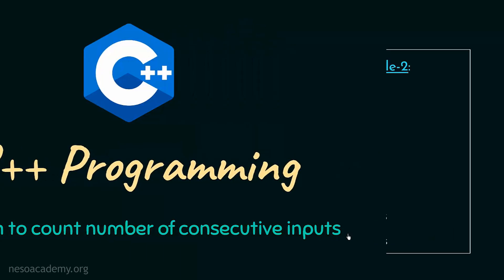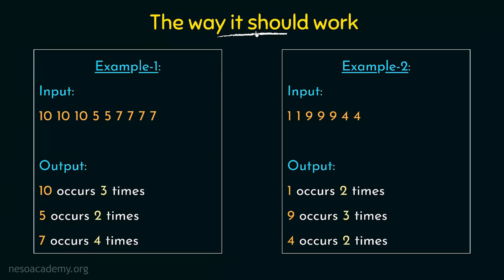Let's see how this program should work. Suppose the user inputs values like 10, 10, 10, 5, 5, 7, 7, 7, 7. We see that 10 has consecutively occurred three times, 5 has occurred consecutively two times, and 7 has occurred consecutively four times. So it should give output saying 10 occurs three times, 5 occurs two times, and 7 occurs four times.